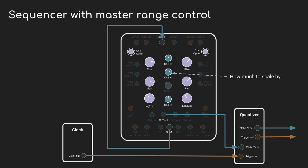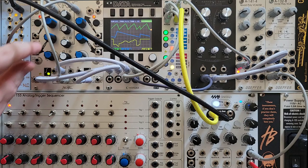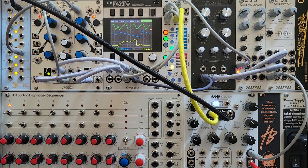One solution to that is to use the other Maths attenuator channel as a master range control. Instead of taking everything out of the sum straight to the sequencer, pass the sum back into channel 2, and then use that attenuator to keep everything reasonable. Then take the channel 2 output and run that to the sequencer. If you turn the attenuator all the way down, your range goes down to just a couple of notes, or you can open it up for a wider range.